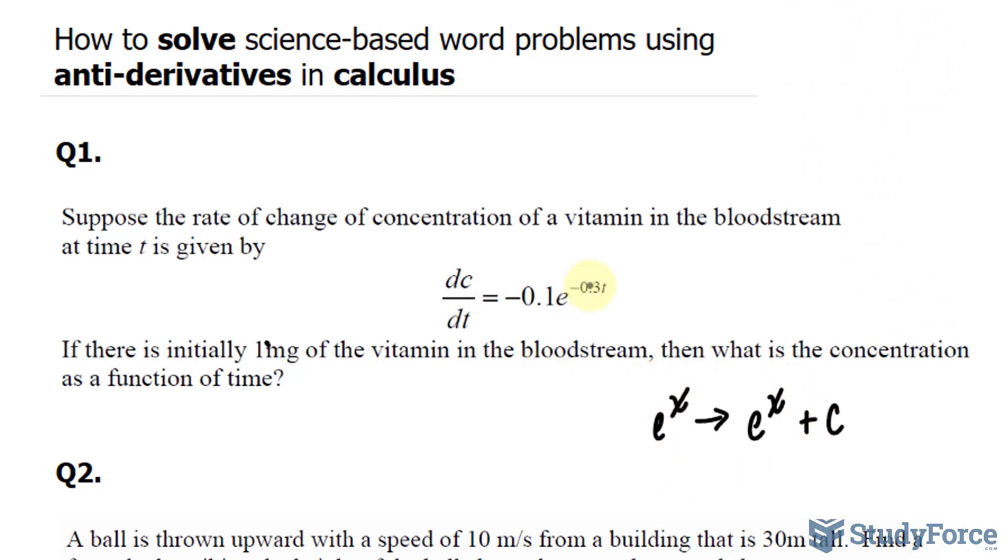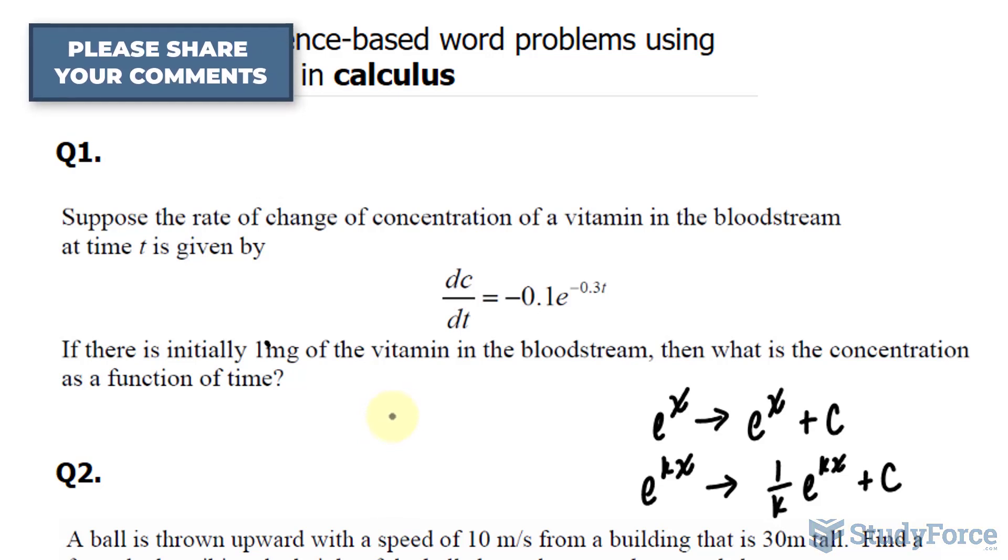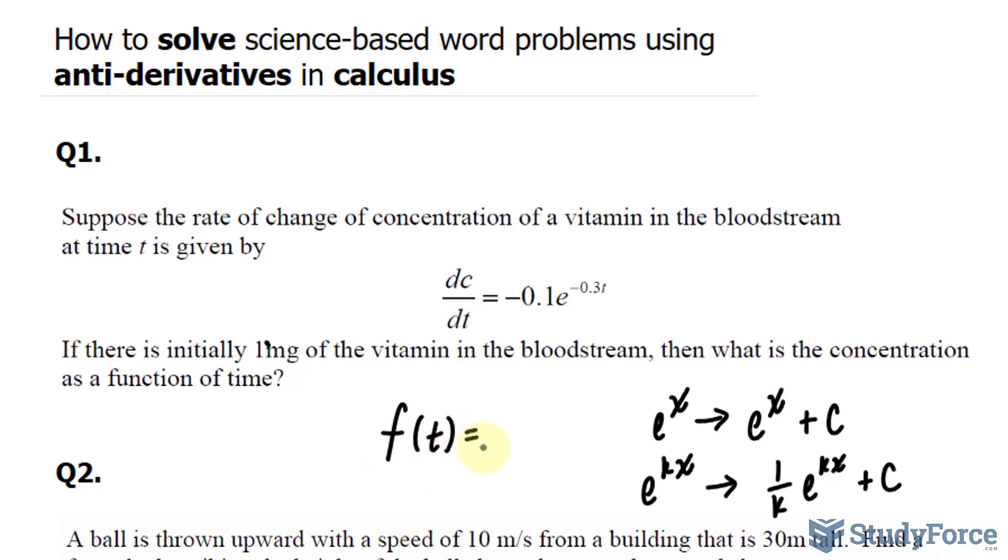If you ever run into a situation like this, remember this: e to the power of kx, where k is a constant, the integral of that is 1 over k times e to the power of kx plus c. Now, let's apply that to our equation. If we find the antiderivative, we end up with our original function, which I'll say is c of t is equal to. The reason why I wrote down c of t is because it's with respect to t, and surely you can swap this c with a different letter if you like.